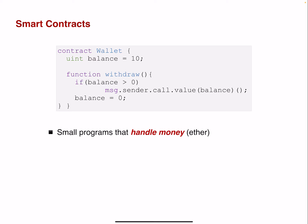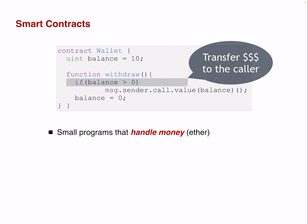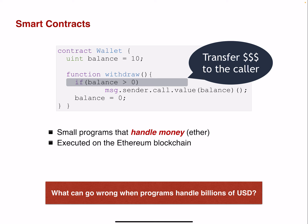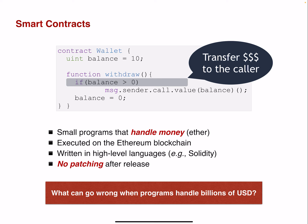This is a small program and it can handle money — in this particular case Ether, but it can handle any type of token or digital asset that you define. So this is a transfer of money to the caller. What do you think can go wrong if we write such a program? This is executed on the Ethereum blockchain according to the EVM, and smart contracts are typically written in high-level languages such as Solidity.